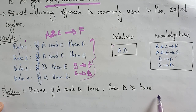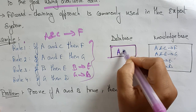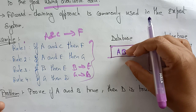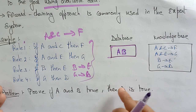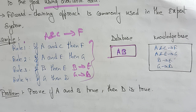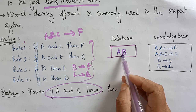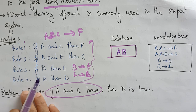Based on the rules and the available data we have to reach the goal. The problem is: prove if A and B are true then D is true. That means A and B are already present in the database — they are already fixed. Finally, D also has to reach that database. Whenever D has reached the database, our condition is satisfied — we have reached the goal. Let's start and execute this.